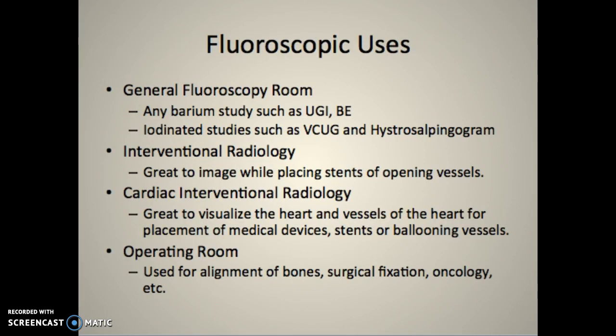General room fluoroscopic tables are used for any kind of barium study: upper GIs, BEs, and swallow function videos. We also do iodinated studies such as VCUGs or hysterosalpingograms, cystograms, and other studies. Interventional radiology is a great place for stents and opening up vessels. There's cardiac interventional radiology - sometimes these two are combined depending on the size of the facility - used for anything to do with the heart: stents, pacemakers, defibrillators.